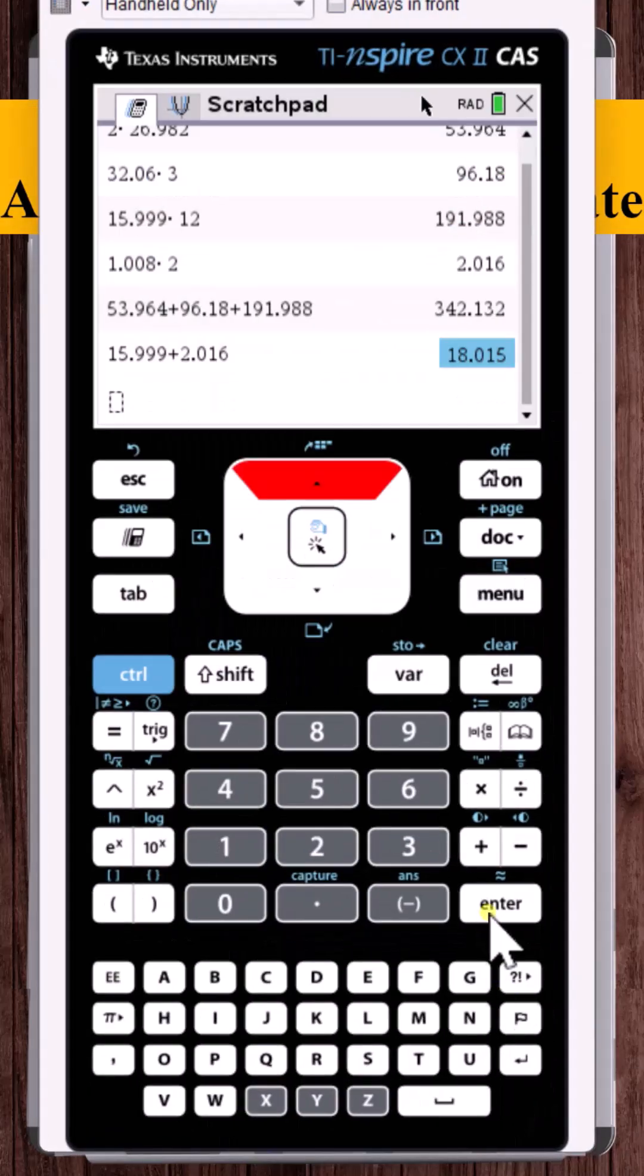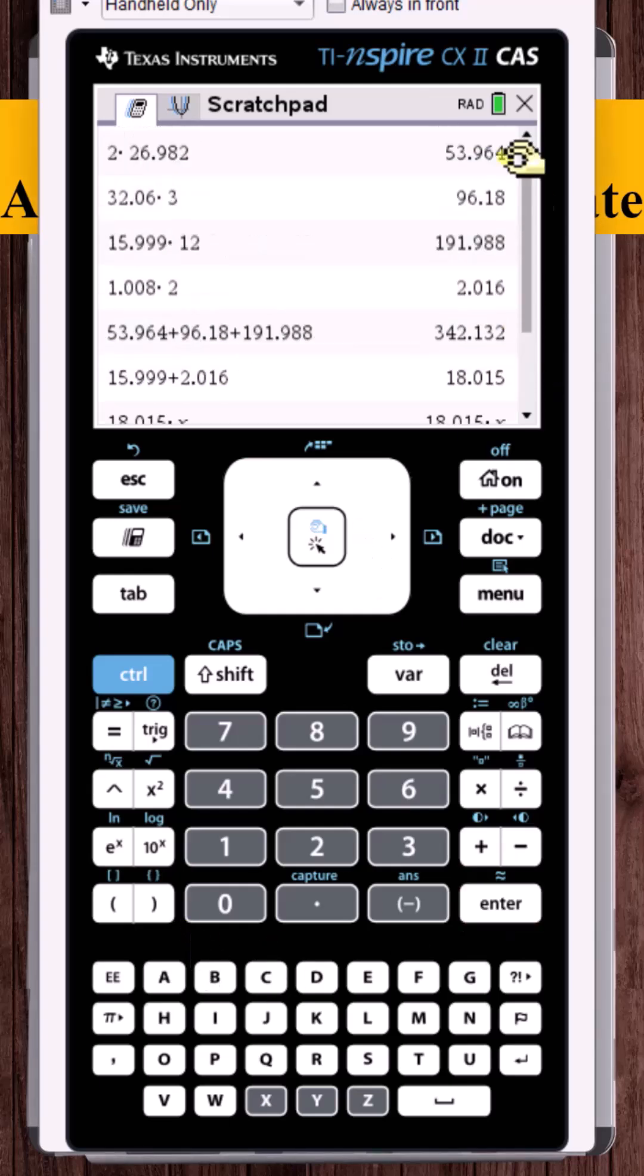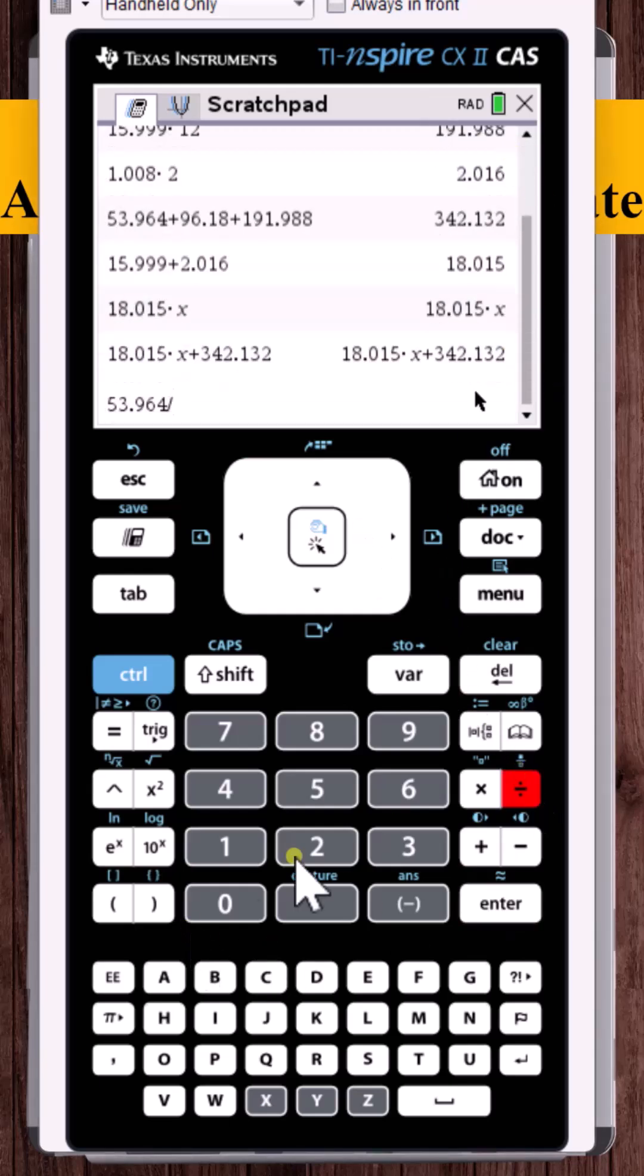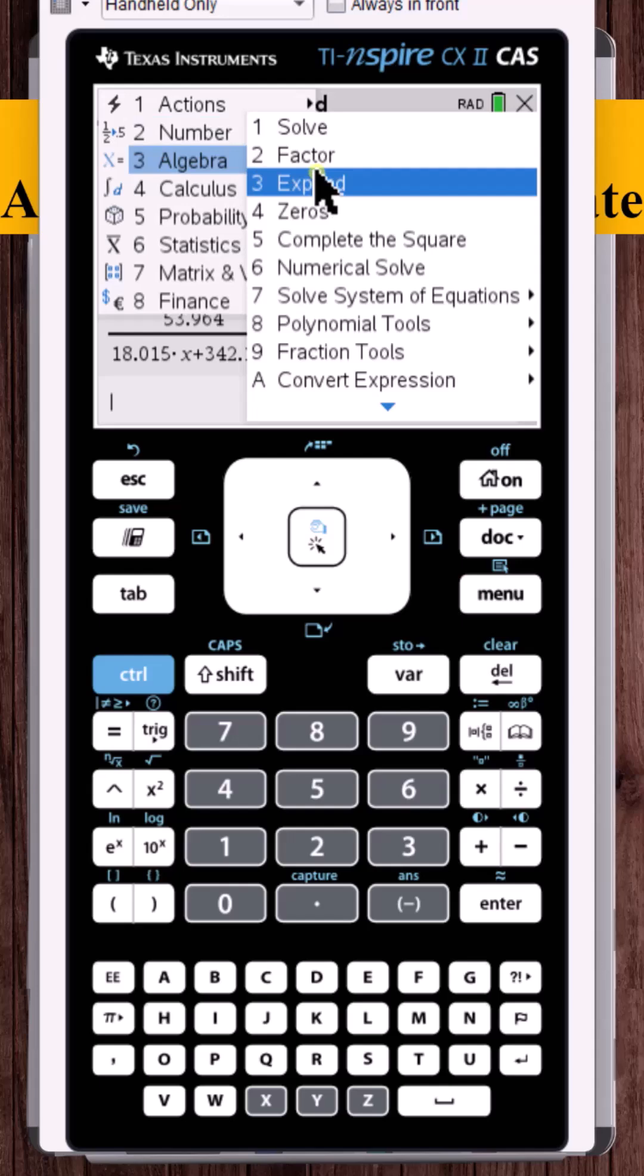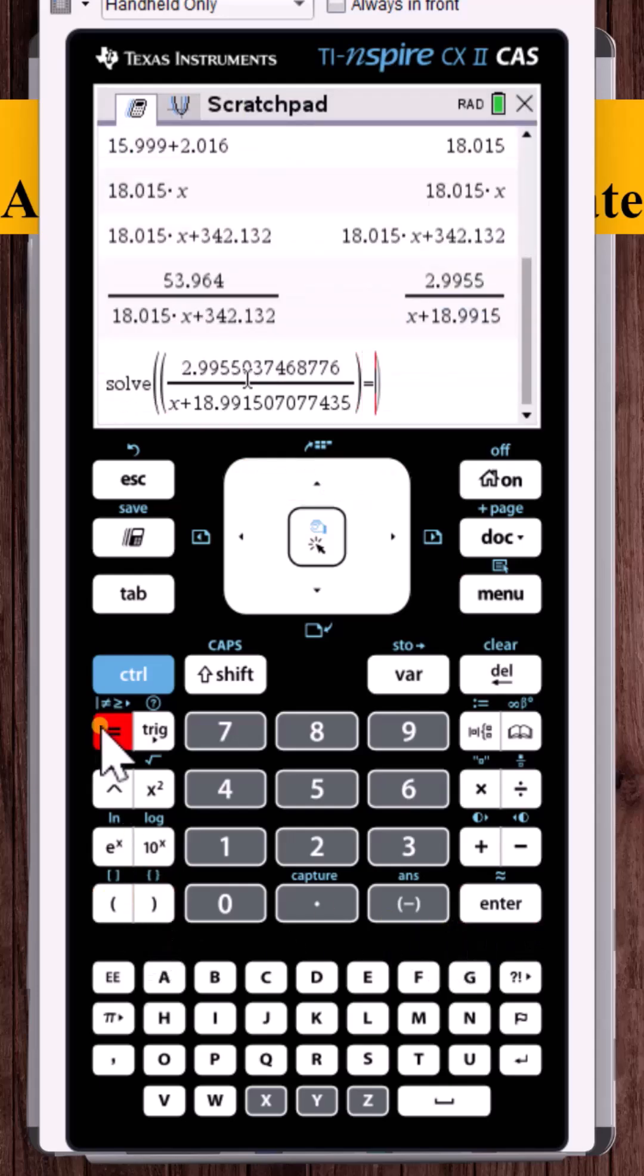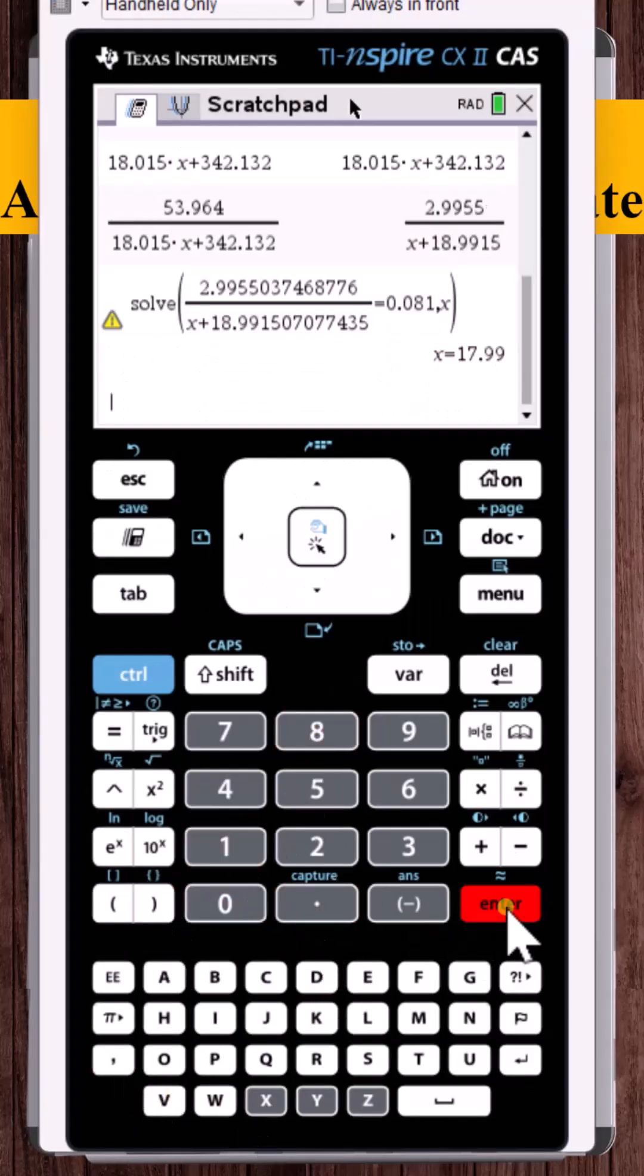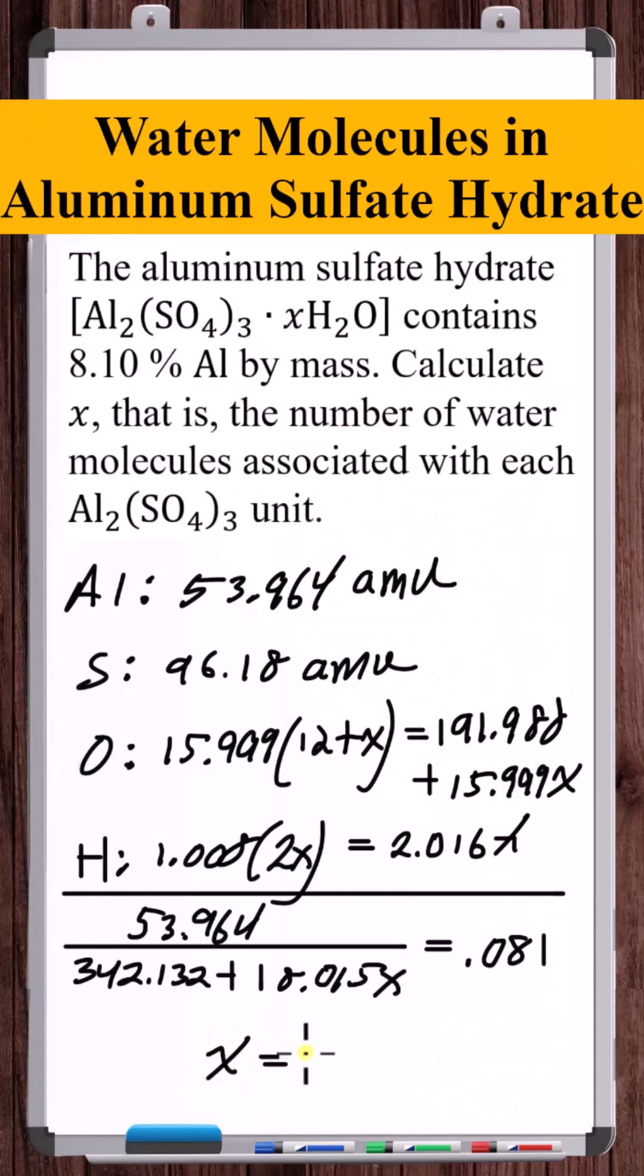We've got this times X plus this. Now take 53.964 and divide it by this. We want to take all of this and set it equal to 0.081, and solve this for X. 17.99, so 18. X is equal to 18.